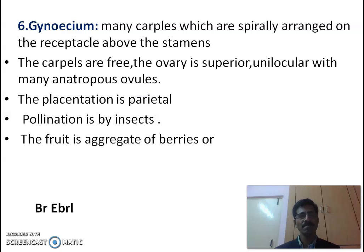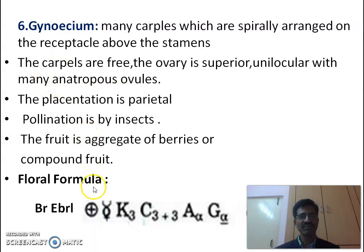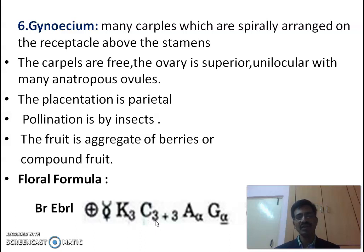Pollination is by insects — it is also called entomophily. Usually we observe an aggregate of berries or compound fruit in Annonaceae. The floral formula: Br (bracteate), EBr absent (bracteoles absent), actinomorphic, bisexual, K3 (sepals free), C3 or 3+3 (either three or six petals arranged in two whorls), A∞ (stamens numerous and spirally arranged), and G∞ (numerous carpels in apocarpous condition); hypogynous flowers are observed.